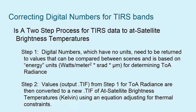TIRS is a bit different. The TIRS data is changed to at-satellite brightness temperatures for the thermal bands. In step one, the digital numbers are taken and converted to energy units. Then in step two, the output from step one is used to correct for top-of-atmosphere radiance and create a new TIFF that is at-satellite brightness temperatures in Kelvin.